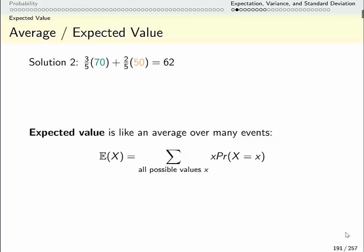We would call it an expectation or an expected value and you can think of this as an average over a whole bunch of events. So this would be the sum over all possible values of the value times the probability of it happening. So here one value is 70, the probability of getting a 70 is three-fifths, one value is 50, the probability of getting 50 is two-fifths. This line here is the definition of an expected value or expectation for a discrete random variable.